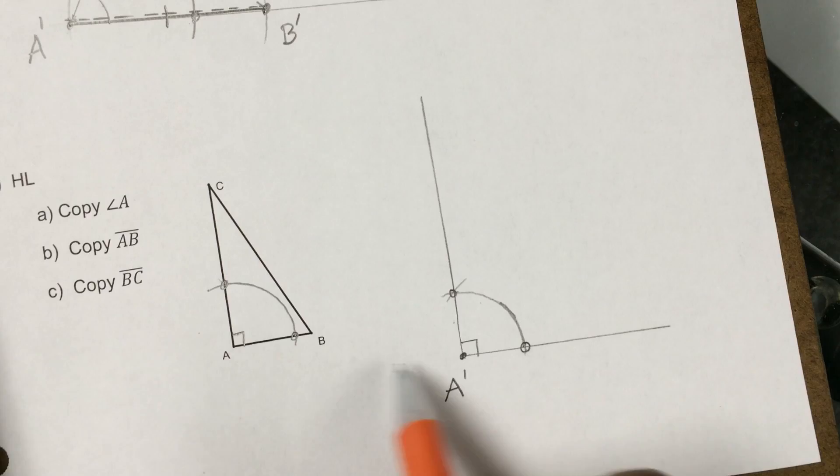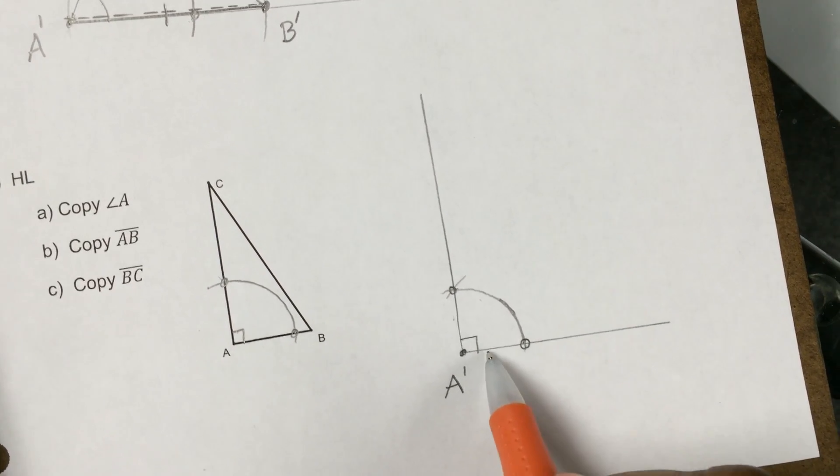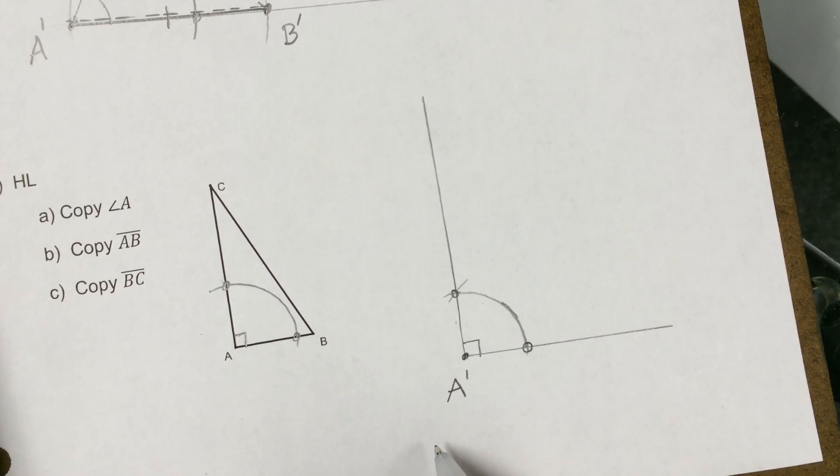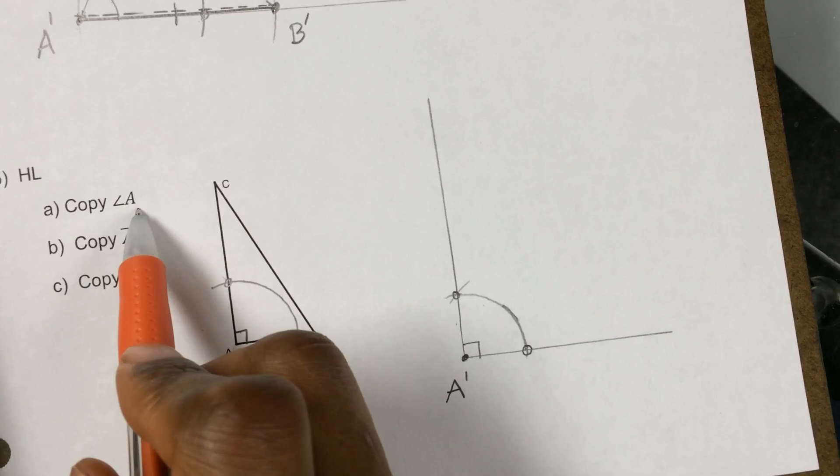Which, it looked like a 90-degree angle. It must be if we're doing hypotenuse leg. And in fact, our copy looks like a 90-degree angle as well. So, so far, so good. So we've copied angle A.